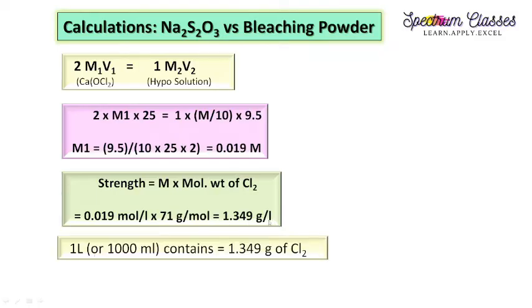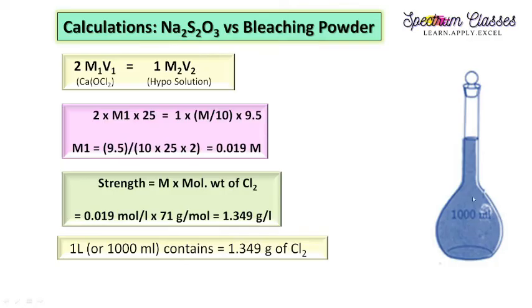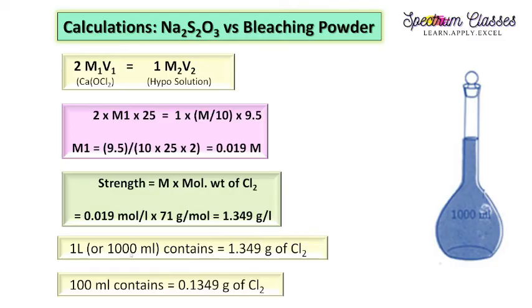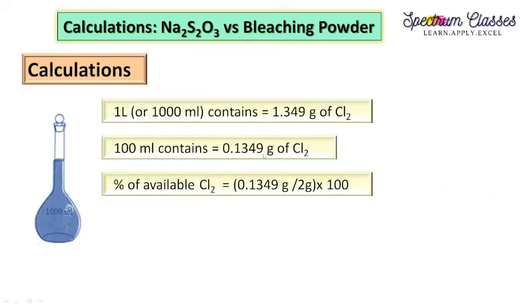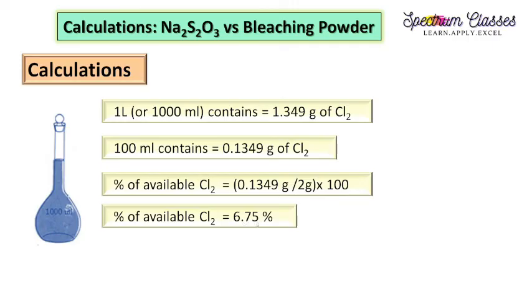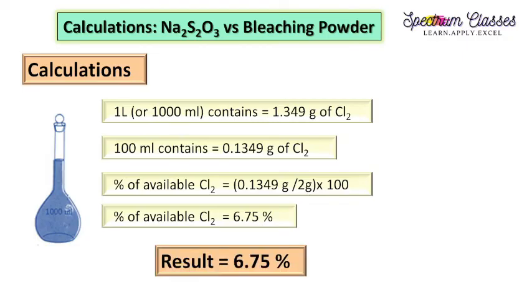So 1000 ml contains 1.349 g of Cl₂. Since I prepared the solution in 100 ml rather than 1000 ml, I divide both sides by 10: 100 ml contains 0.1349 g of Cl₂. For percentage of available chlorine, this 0.1349 g was produced from 2 grams of bleaching powder dissolved in 100 ml. So percentage = (0.1349 / 2) × 100 = 6.75%. The available chlorine is 6.75%.